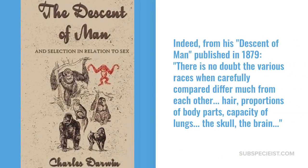Indeed, from his Descent of Man, published in 1879, quote: 'There is no doubt the various races, when carefully compared, differ much from each other — hair, proportions of body parts, capacity of the lungs, the skull, the brain.' End quote.